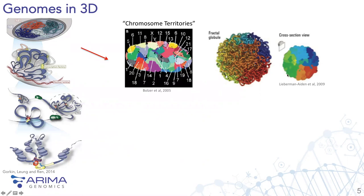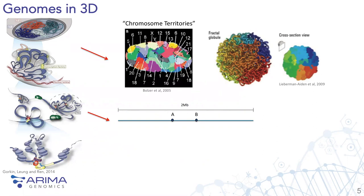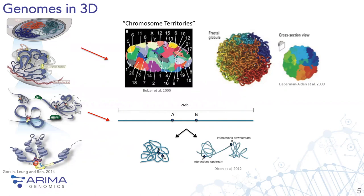Regarding topological domains: if you had a two-megabase region of your genome laid out as a thread in a linear format with positions A and B, you might expect random folding to leave A and B close in 3D space. But the concept of topological domains shows that A and B can actually be distal in three-dimensional space because they live in two distinct topologically associated domains, often represented as triangle structures separated by a boundary.